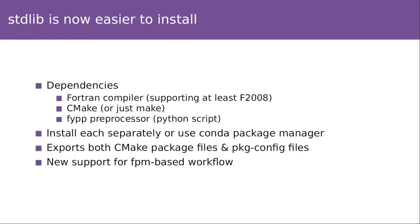Besides new features, the standard library has also improved a lot behind the scenes with its infrastructure. It's now really straightforward to work with, whether you're a developer or a user. It has three dependencies if you want to build it yourself: a reasonably modern Fortran compiler supporting at least the 2008 standard, a reasonably recent version of CMake or plain makefiles, and the FPP preprocessor — a Python script used as a template engine to produce generic routines. These are individually not that hard to install; you can use your own package manager, pip, or Conda to get nice compatible versions in an isolated environment.